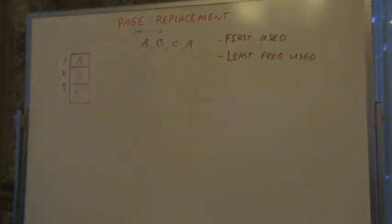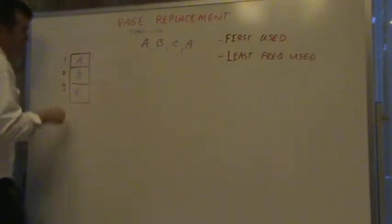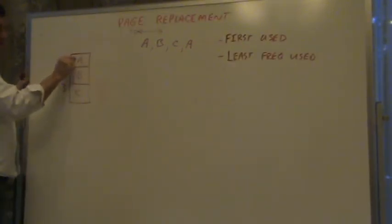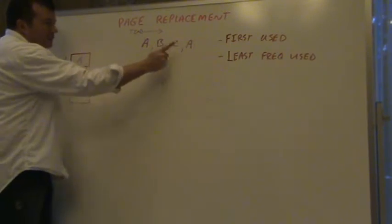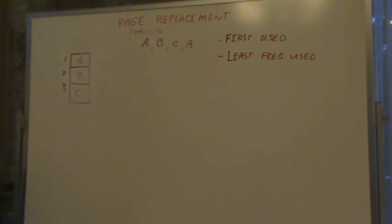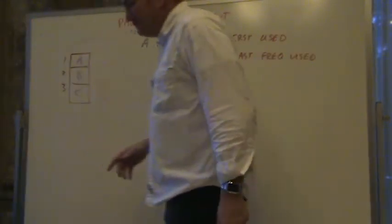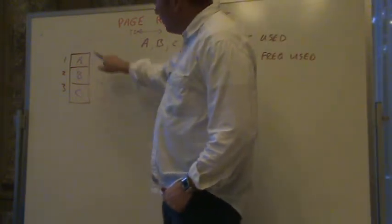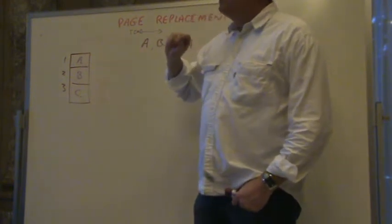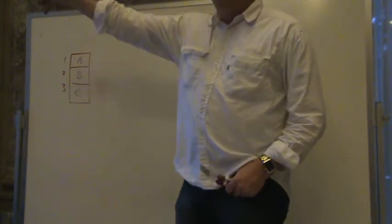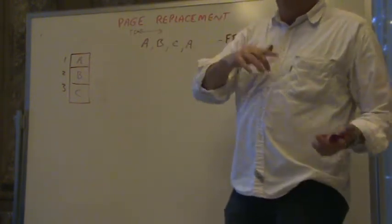On a per-instruction basis: if we loaded in the first page and a lot of instructions keep coming out of it, then it jumped to another and did one, then came back to the first and used it a lot, then jumped out and did one, then came back and used it a lot — that first one is the one we want to keep around, because it seems to be used a lot. So now you're keeping count on a per-instruction basis, using the past to predict the future. What we'd really like to know is: in the future, out of A, B, and C, which one will be used where the next use is furthest into the future? That's the one we'd like to kick out.